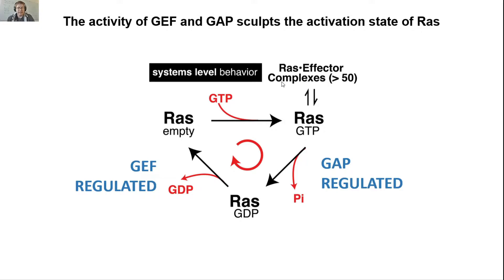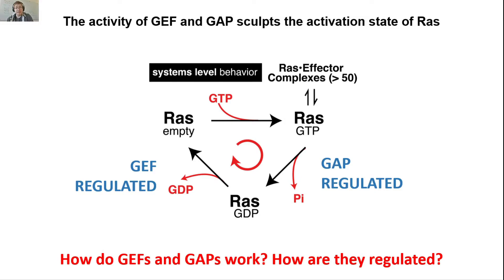After going through that exercise, hopefully we can see how different configurations of GAP and GEF allow this system to produce regulated amounts of RAS-GTP in the cell in response to different stimuli. If that logic still isn't clear, go back through that understanding check and work it out. It's not super complicated — it's just some terminology and figuring out who's an activator. Once we know these molecules exist — RAS-GEFs, RAS-GAPs, and effectors — we need to ask how do these GEFs and GAPs actually work, and how are they regulated? Because it's the amount of active GEF or active GAP that sets how much RAS-GTP is in the cell.